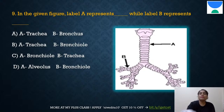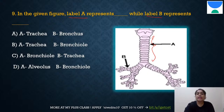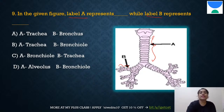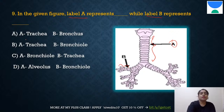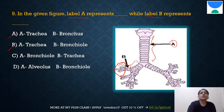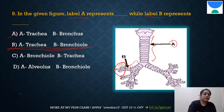Question 9: An image shows labels A and B on the respiratory structures. A is clearly the trachea. B shows further branching into primary bronchus and secondary bronchus, so B is bronchiole. The answer is B: A is trachea and B is bronchiole.